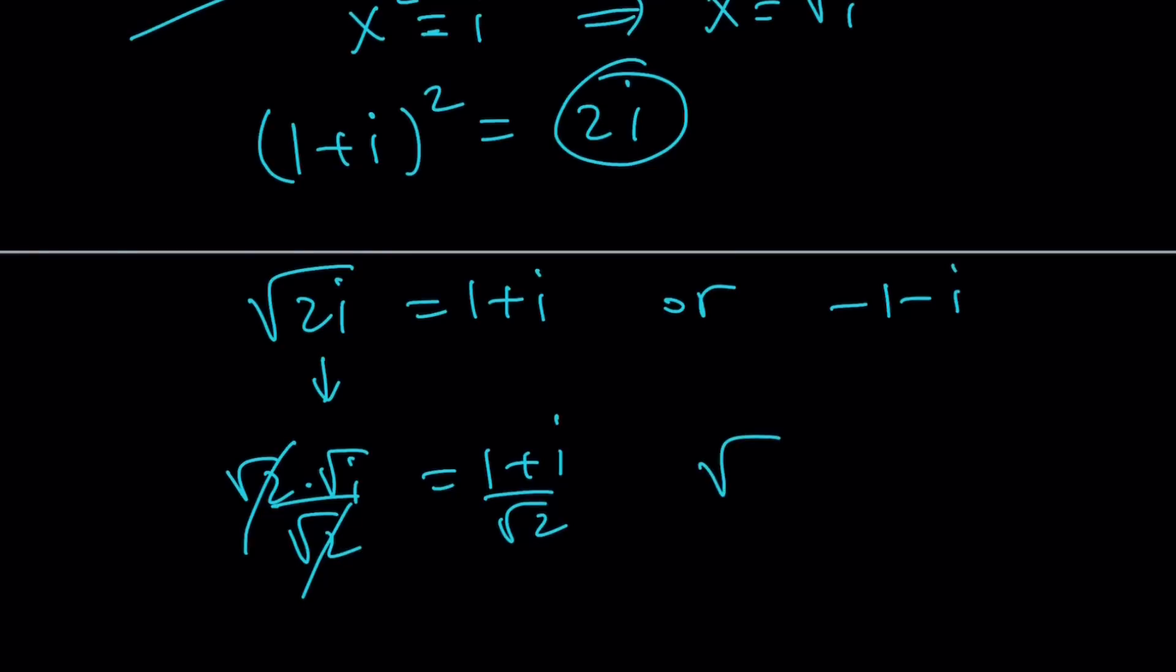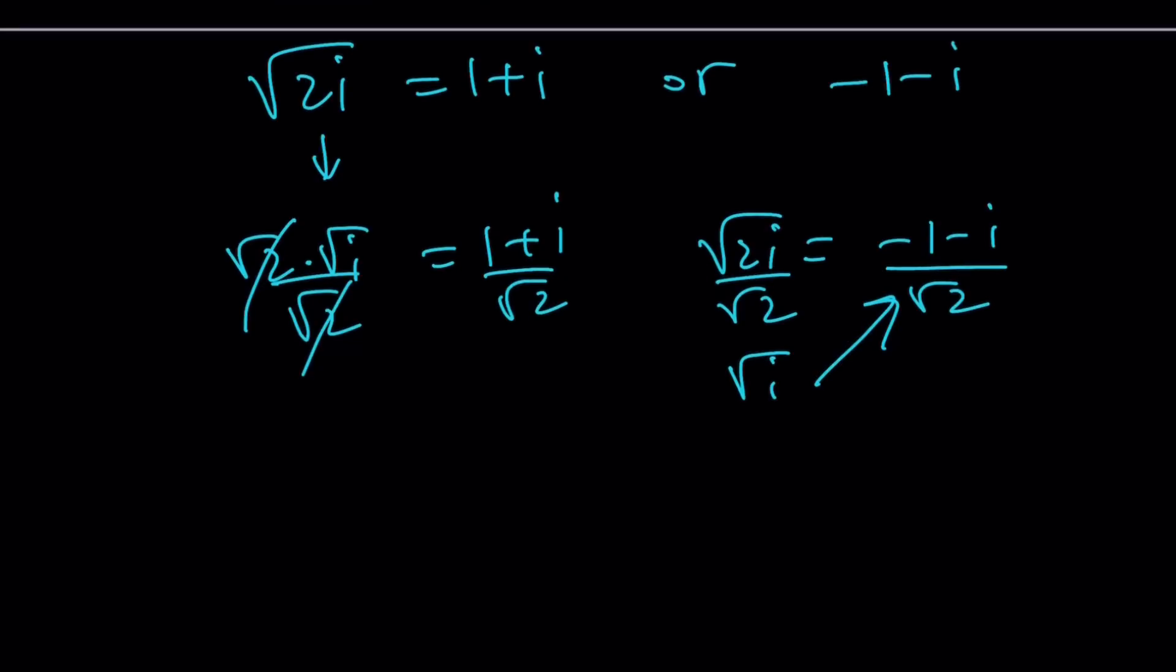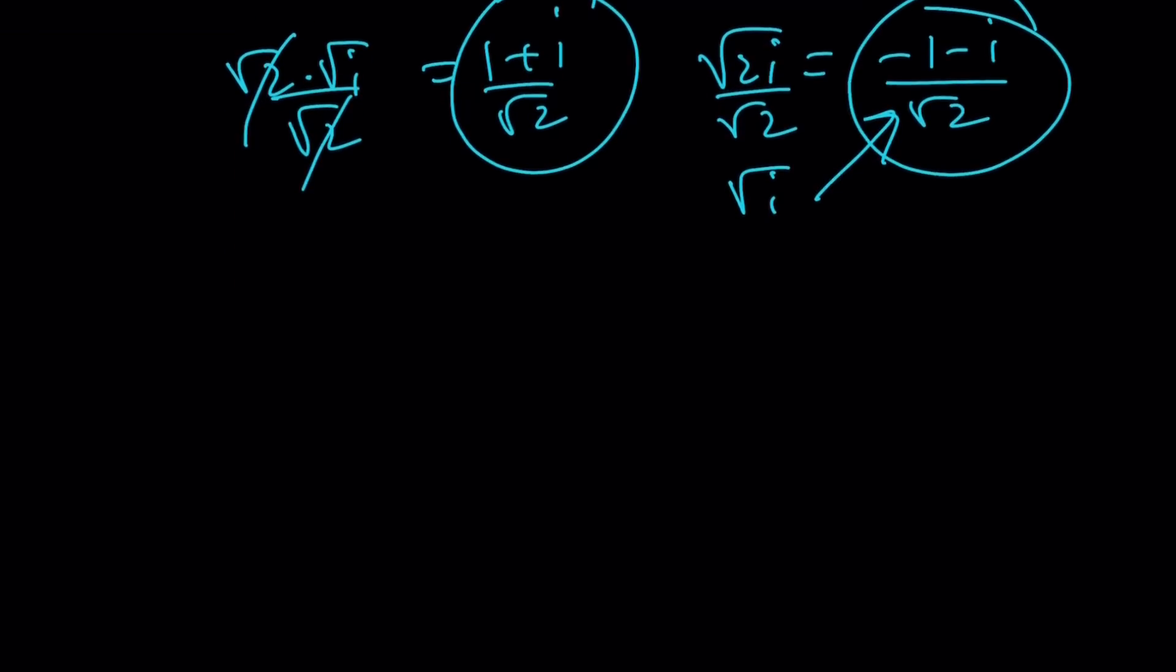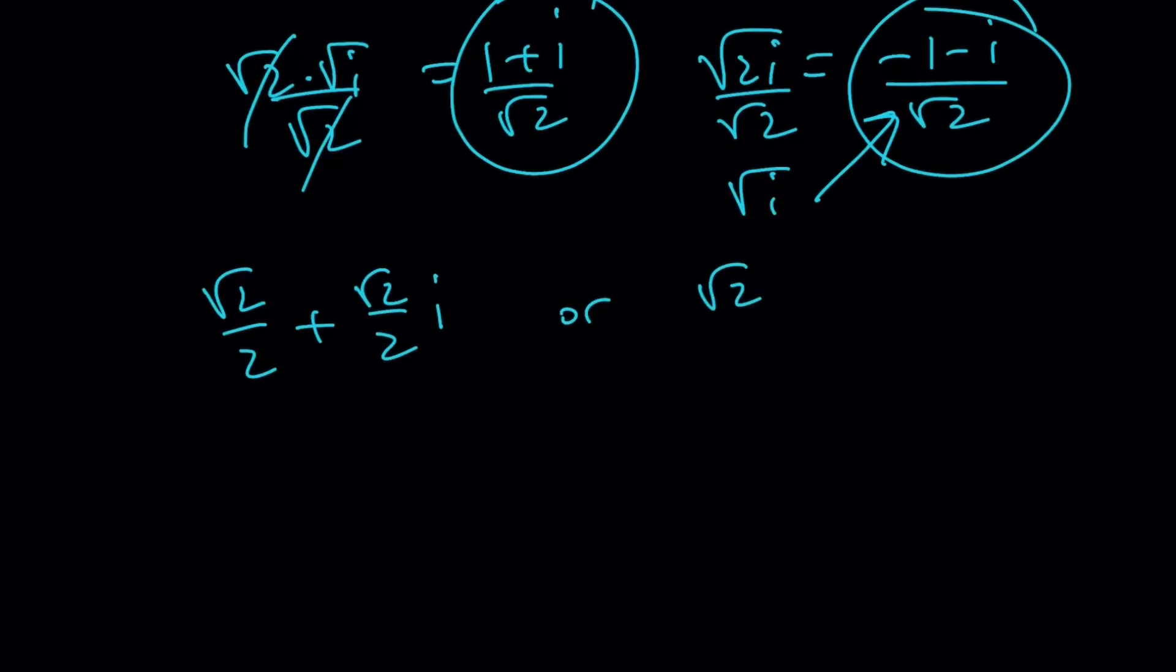So here, the same thing happens. Square root of 2i is equal to negative 1 minus i, and then divide by square root of 2, and you got the answer, okay? So you got two values. If you separate them and work out the denominator, you're going to get the exact same thing. So root 2 over 2 plus root 2 over 2i, or its opposite, right?